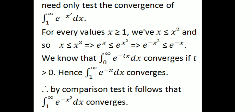For every x ≥ 1, we have x ≤ x², so 1/eˣ ≥ 1/e^(x²), that is e^(−x²) ≤ e^(−x). We know that integral from 0 to infinity of e^(−tx) dx converges if t > 0.